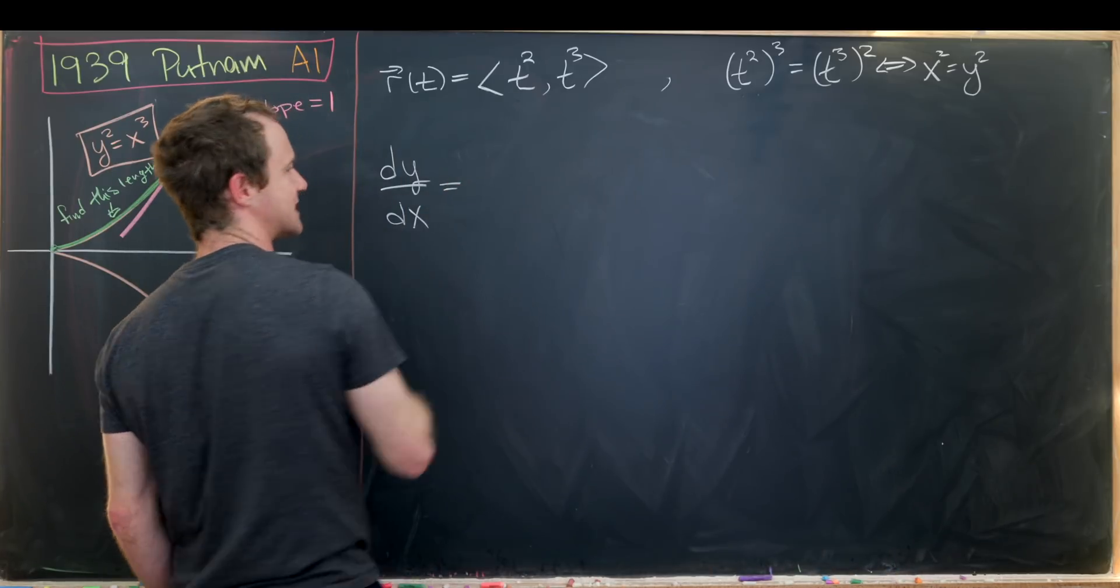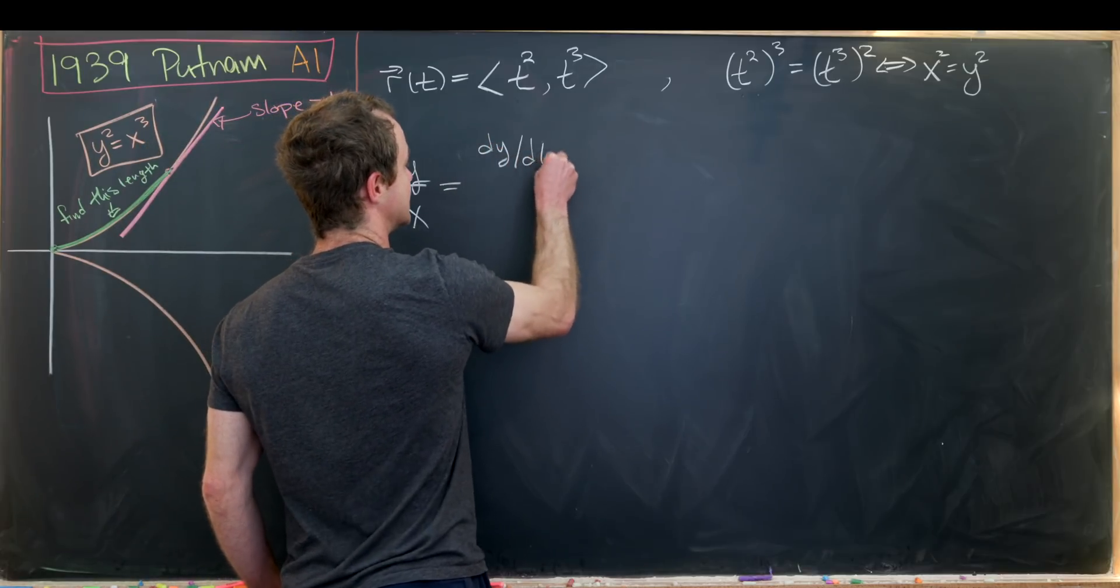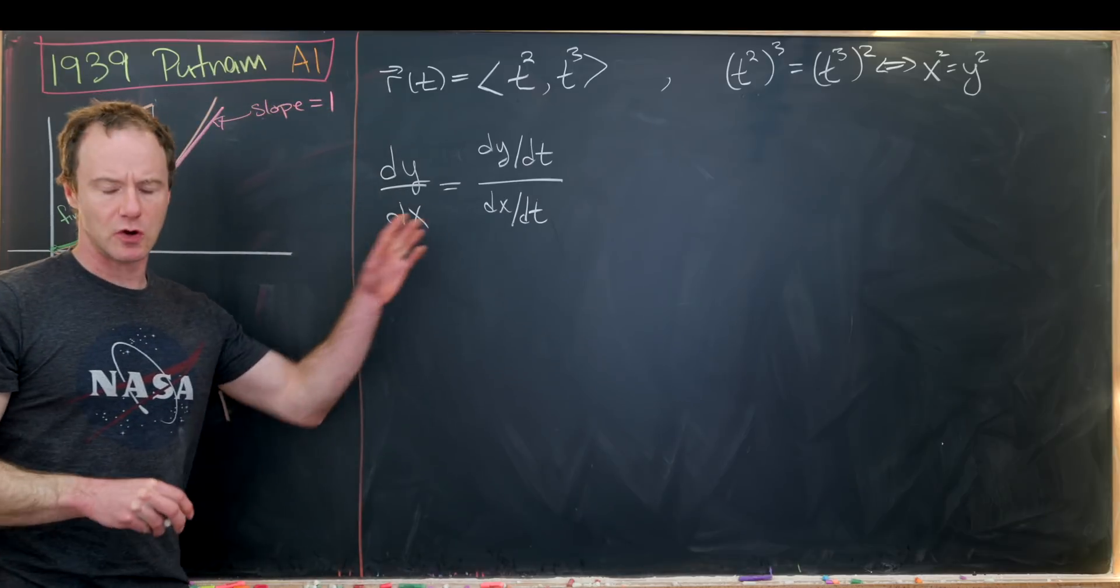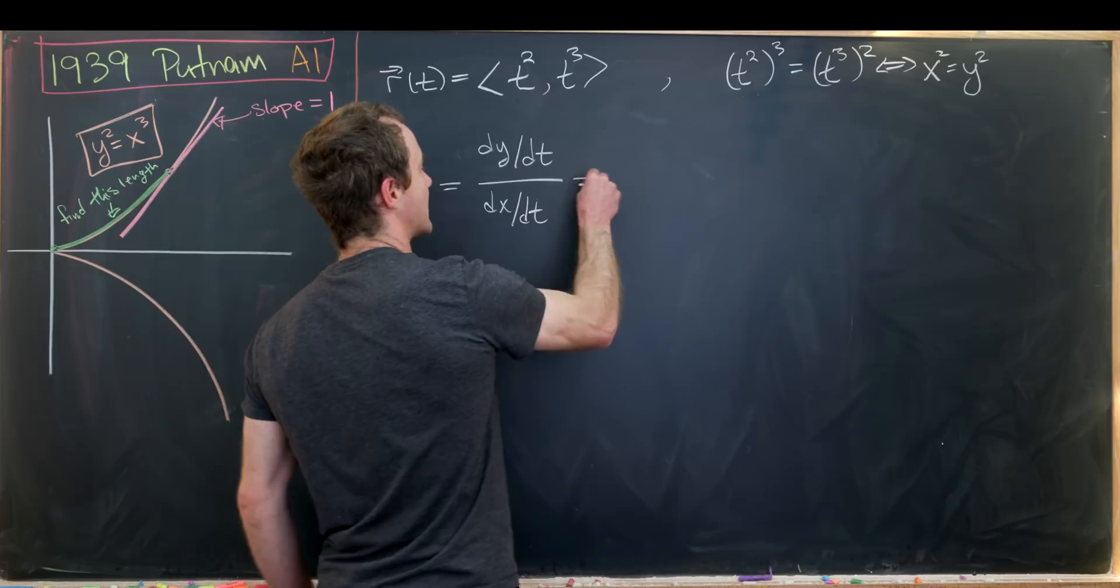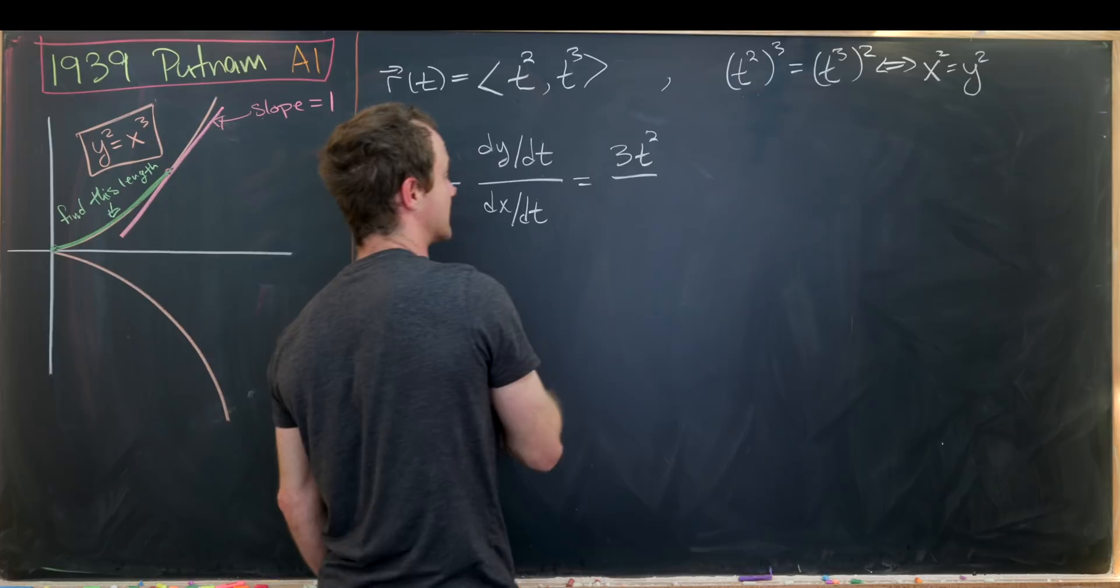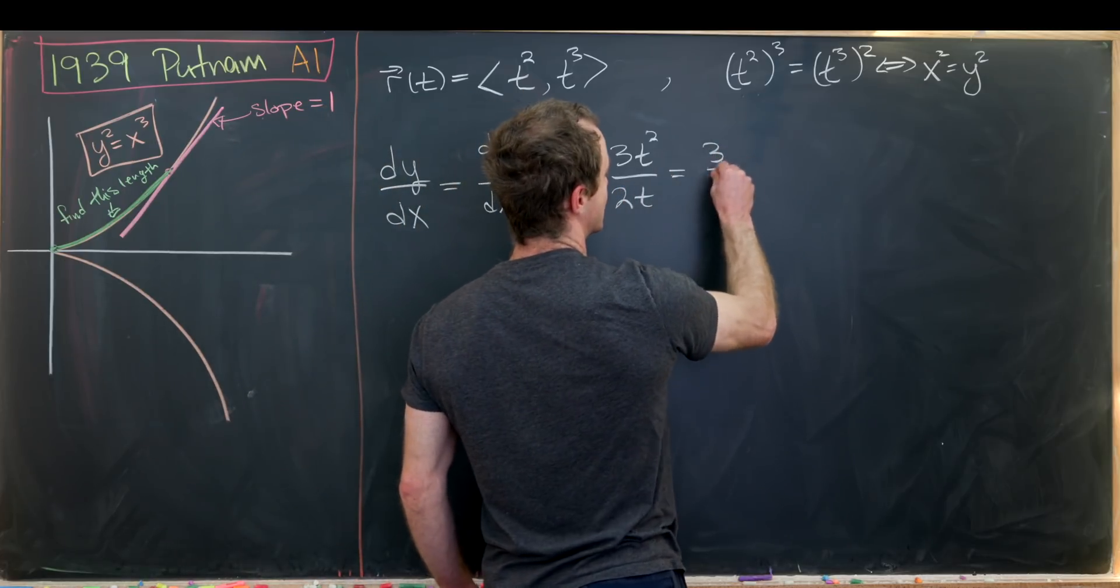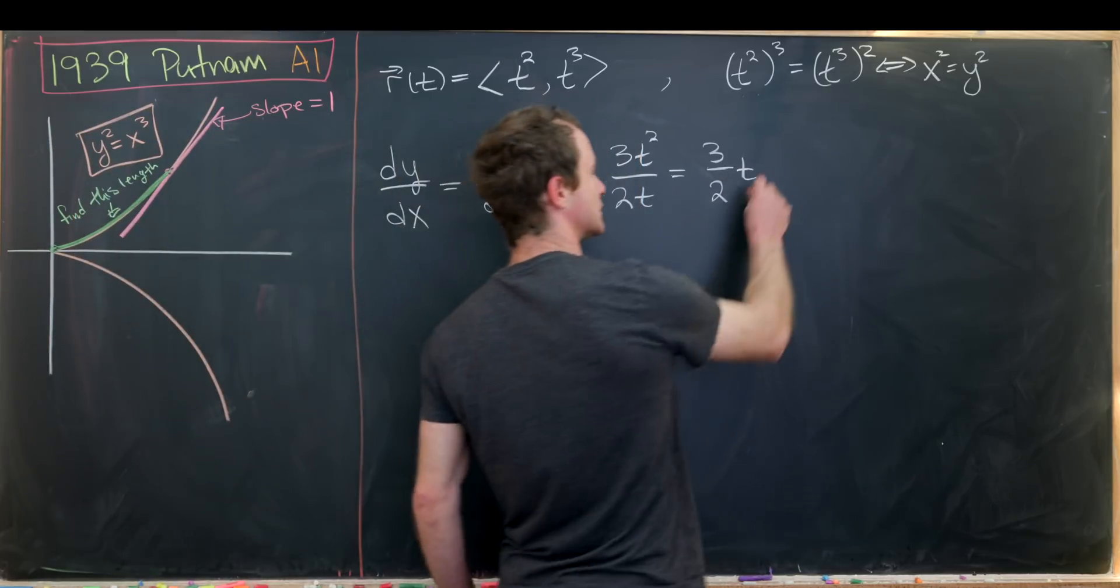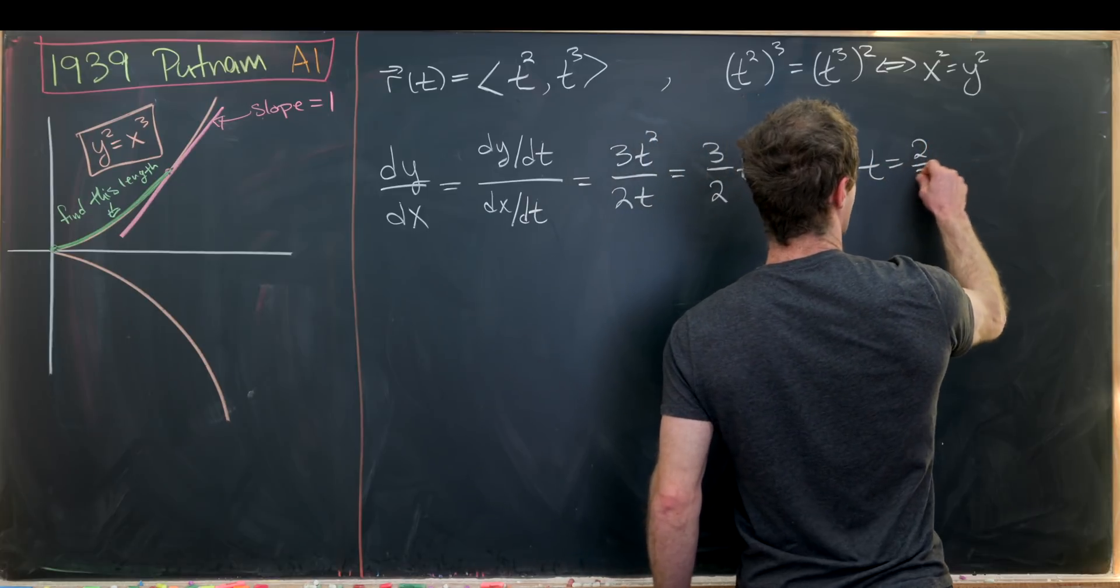Now we'd like to find dy/dx which is the slope of the tangent line. By the theory of parametric curves that's equal to dy/dt over dx/dt. So dy/dt, that's 3t squared. dx/dt, that's just 2t. So in the end, we get 3/2 times t. Since we want this slope to be equal to 1, we'll set this equal to 1 and we get t equals 2/3.